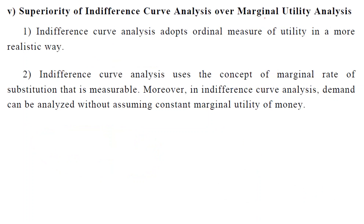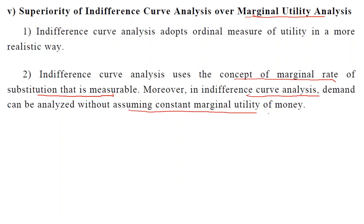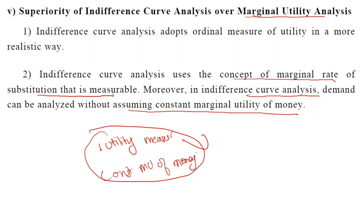Indifference curve analysis is superior over the cardinal approach because it rejects the unrealistic assumption that utility is measurable. It uses the concept of marginal rate of substitution, which is measurable. Moreover, indifference curve analysis can analyze demand without assuming constant marginal utility of money — so two assumptions are dropped: that utility is measurable, and that marginal utility of money is constant.